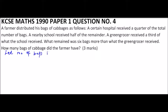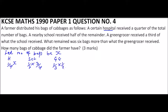The hospital received a quarter of X. The school received a half of the remainder. After subtracting a quarter, the remainder is three over four X, so the school received one half of three over four X. The green grocer received a third of what the school received, so the green grocer received one third of one half of three over four X.